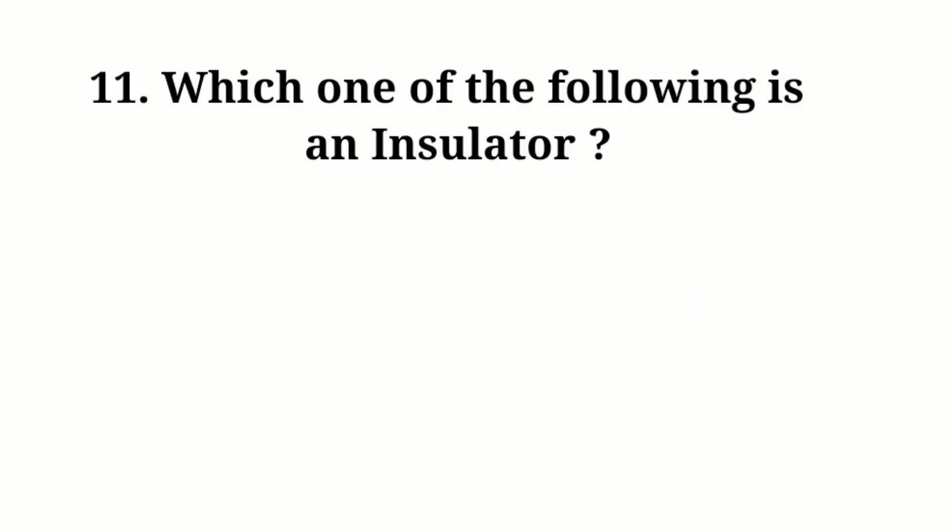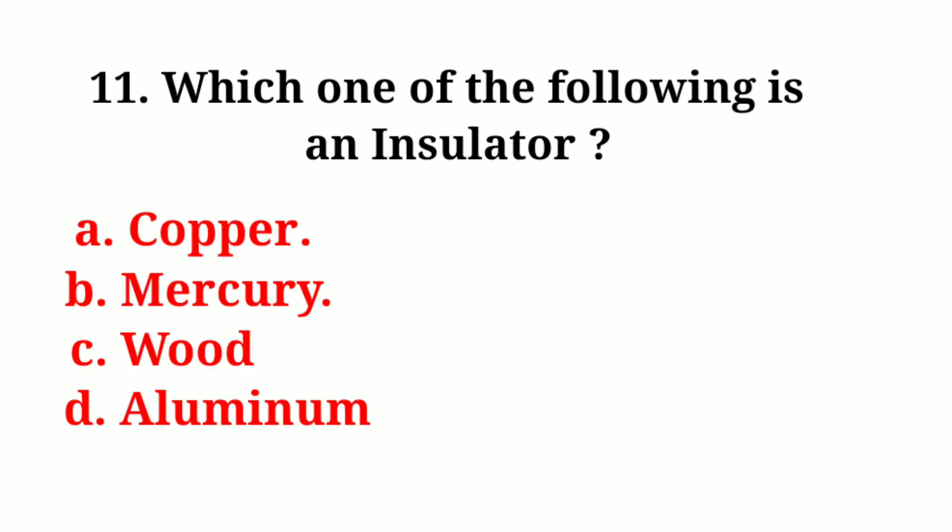Which one of the following is an insulator? Options are copper, mercury, wood, aluminum. Answer: wood.